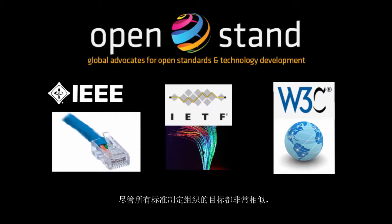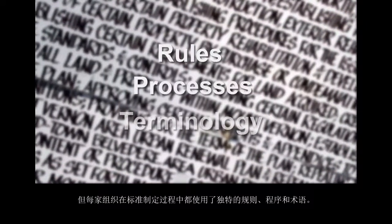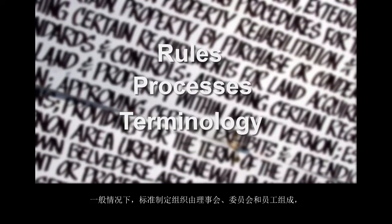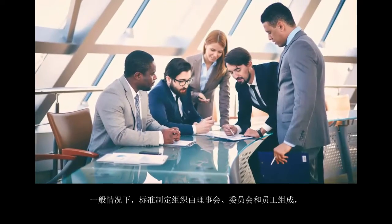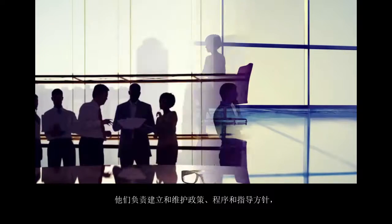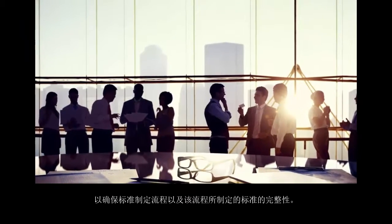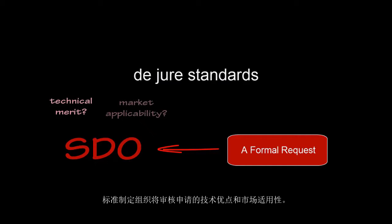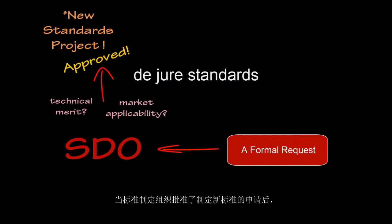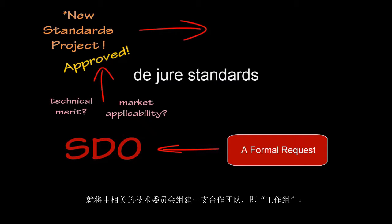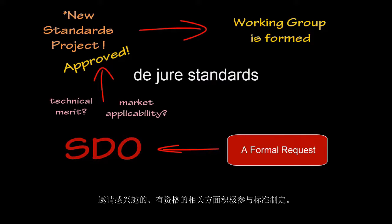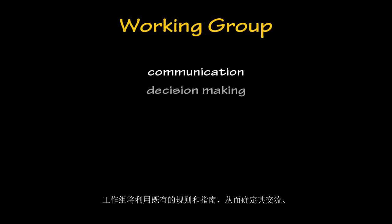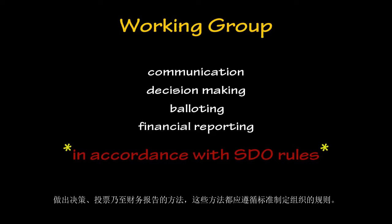While the goals of all SDOs are very similar, each SDO applies its own rules, processes, and terminology to the standards development process. Typically, an SDO is made up of boards, committees, and staff who establish and maintain the policies, procedures, and guidelines that help ensure the integrity of the standards development process. In the case of de jure standards, the development of a new standard is triggered by a formal request to a selected SDO, which reviews the technical merit and market applicability of the request.